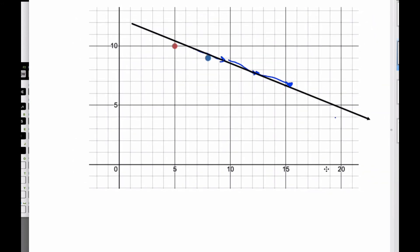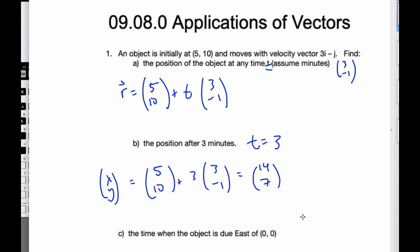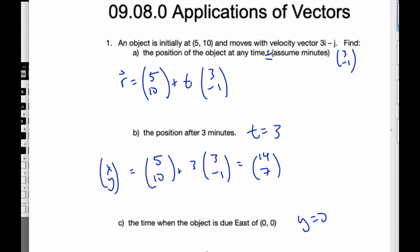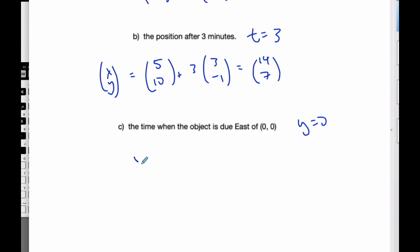So that means that the y is going to be 0. And so if I use the equation (x, y) equals (5, 10) plus t times (3, -1), I know y is 0, so 0 equals 10 minus t. And so t equals 10. So in 10 minutes, it will cross the x-axis, be due east of (0, 0).